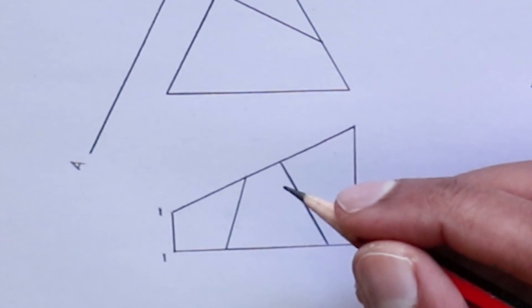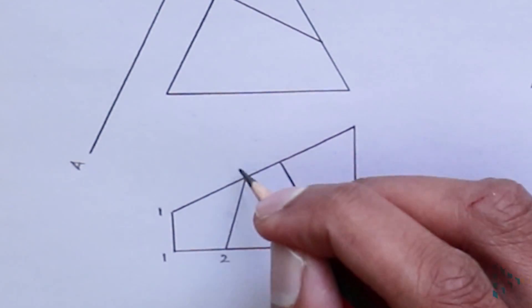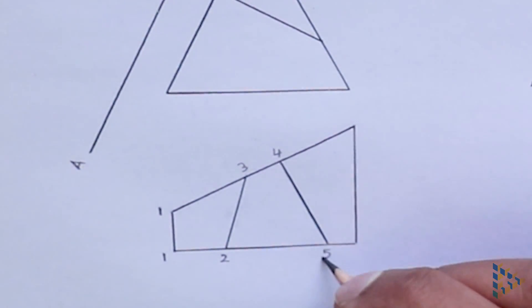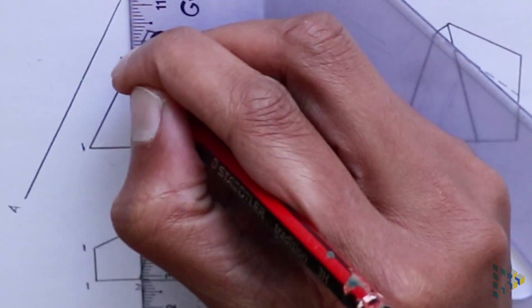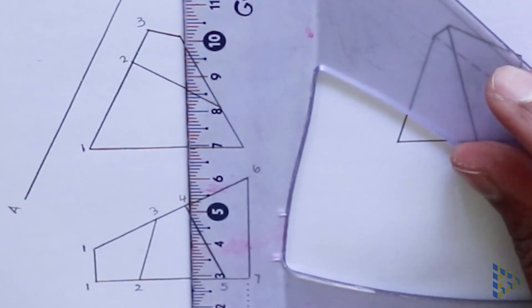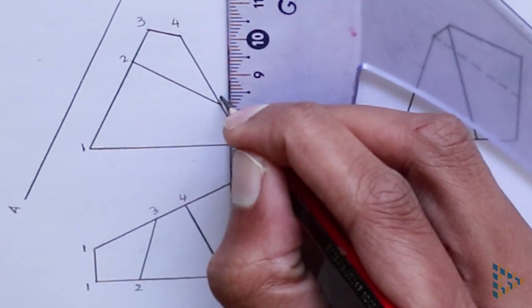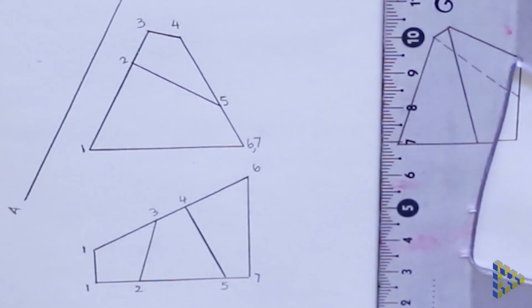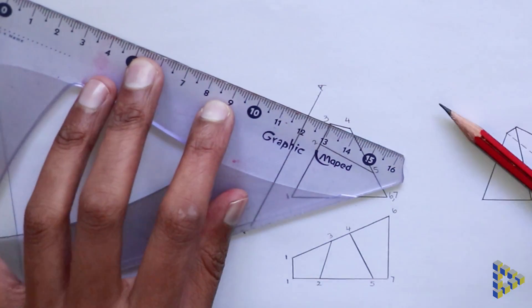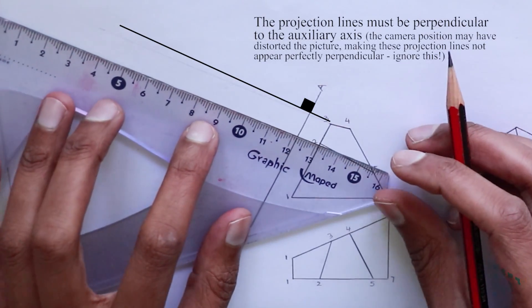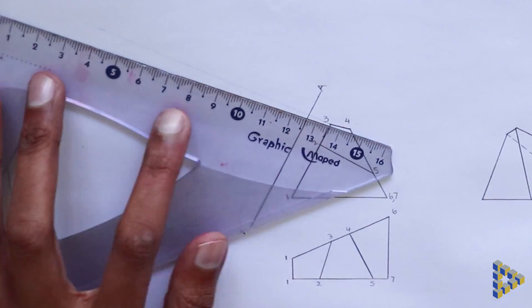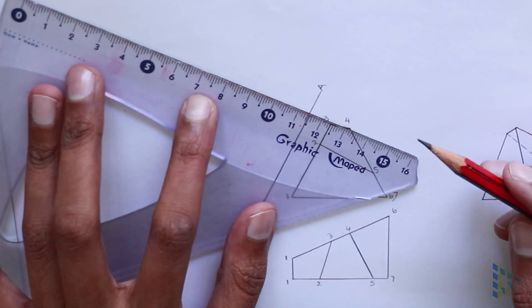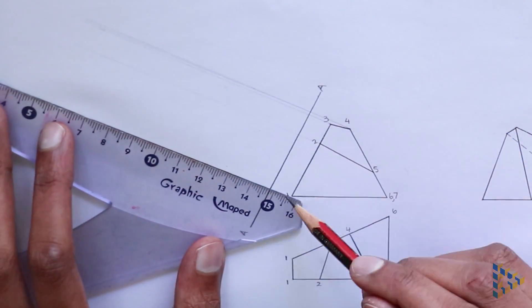First we label each edge on the front and plan views. To construct the primary auxiliary view, use the current view to project edges 1 to 7 about axis AA to obtain height dimensions and use the previous view to obtain the width dimensions.